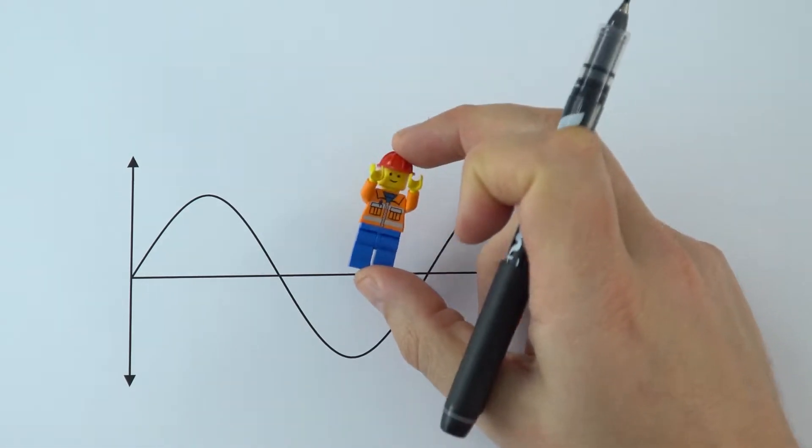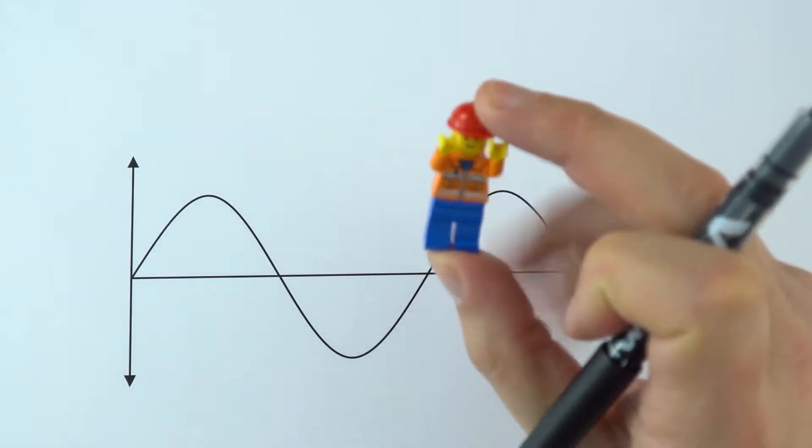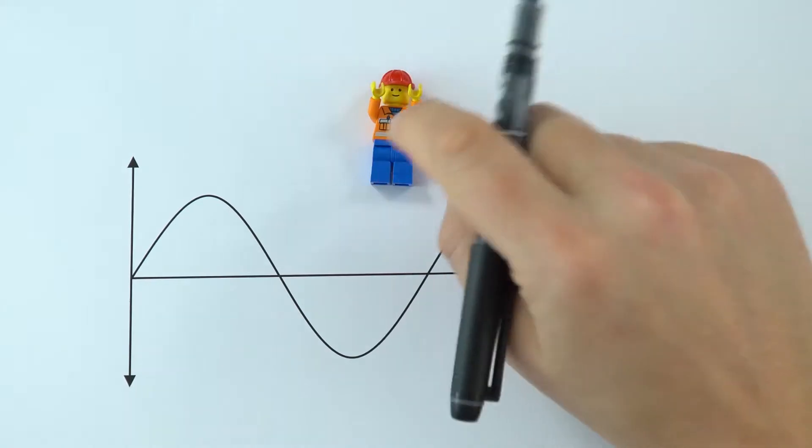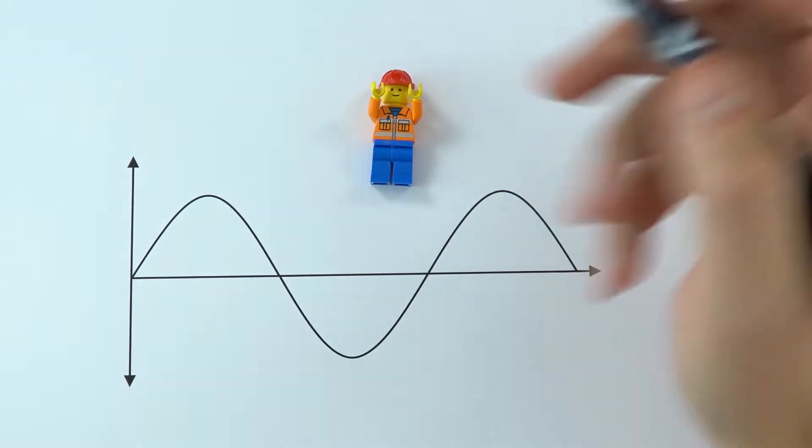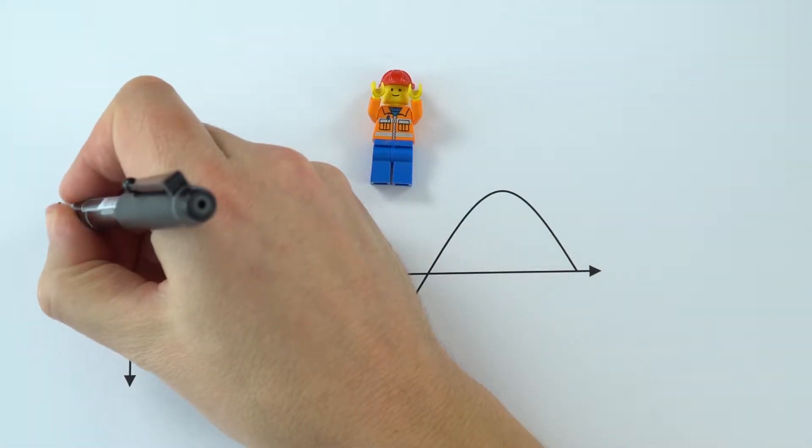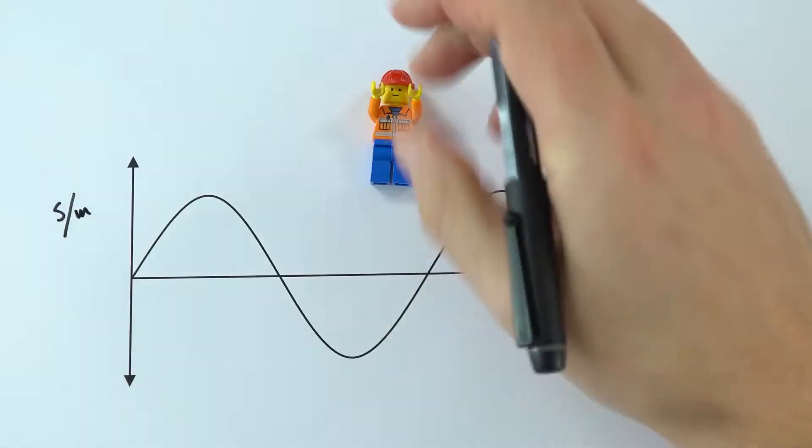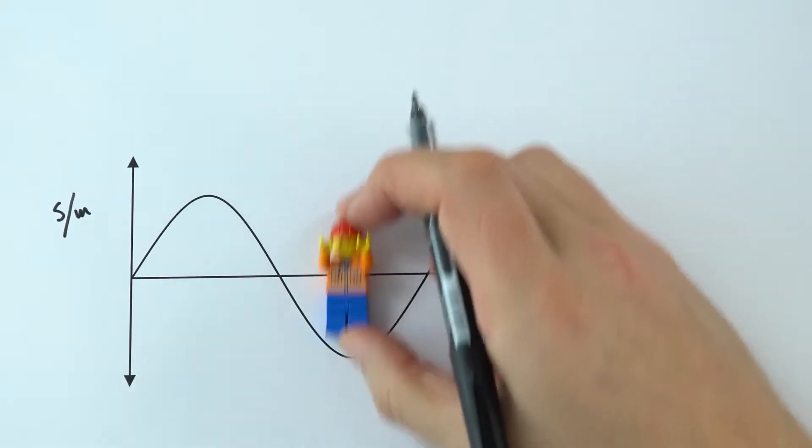Now this graph here, we're just going to be considering the movement of one particle in that wave, or in this case, one of the people on that Mexican wave. Now again, we can look at their displacement, measured in meters. So effectively that's how much they go up and down over time.